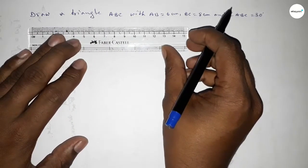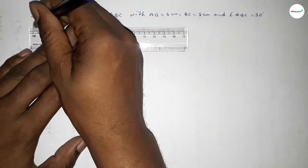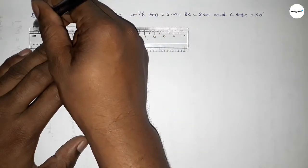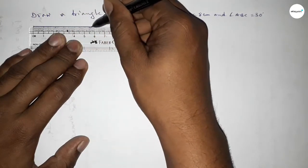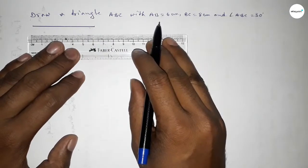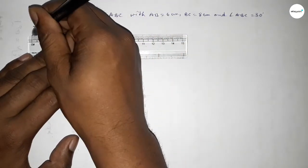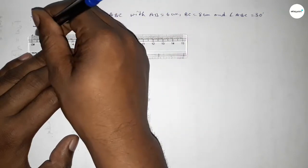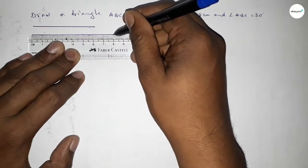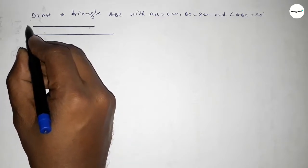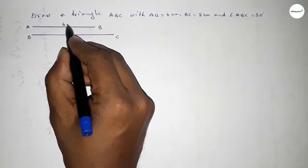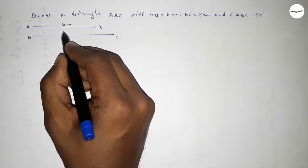First of all, we have to draw a line of length 6 centimeters. This is 6 centimeters. Next, drawing another line of 8 centimeters — starting 0, 1, 2, 3, 4, 5, 6, 7, 8 — this is 8 centimeters. This one is AB and this one is BC.